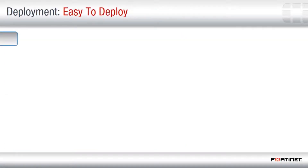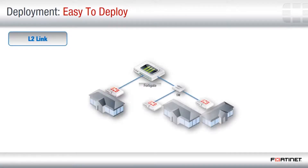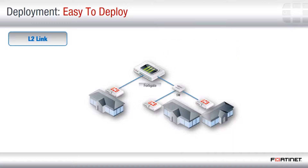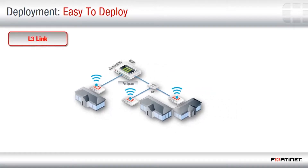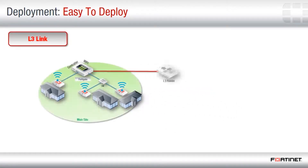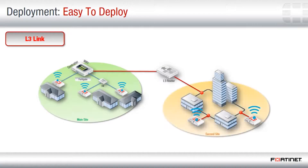Here is a deployment example. We begin with a FortiGate controller connected over Layer 2 links with local FortiAPs, enabling the local wireless network. FortiAPs not within the local broadcast network may also connect to the same FortiGate controller over an IP-routed Layer 3 network to enable wireless networking at a second site.